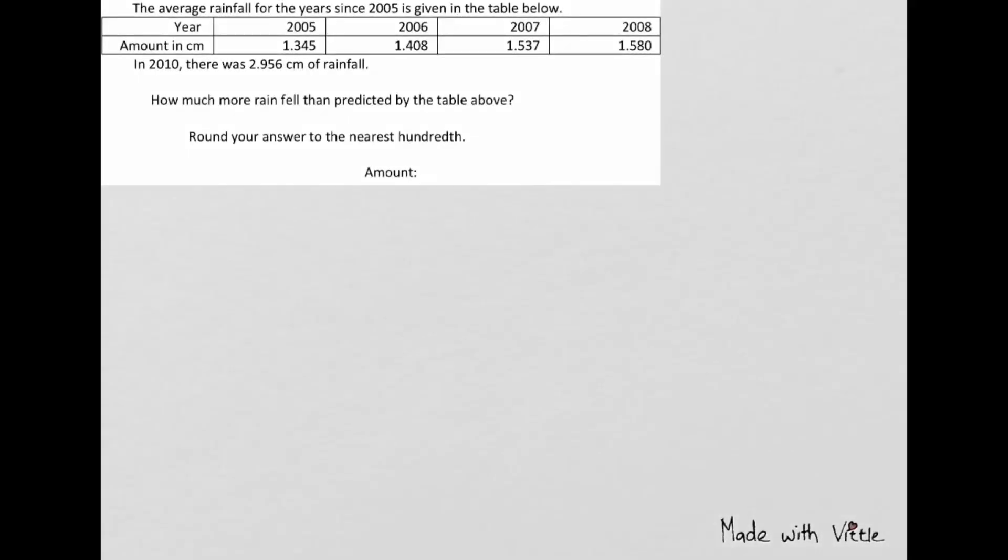The average rainfall for the years since 2005 is given in the table below. In 2010, there was this amount of rainfall. How much more rainfall than predicted by the table above? Round your answer to the nearest hundredth.